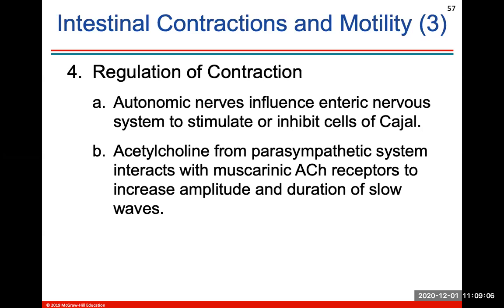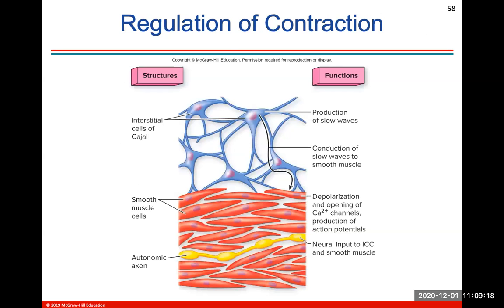Regulation of contraction is under autonomic nerves, which influence the system to stimulate or inhibit these cells. Acetylcholine is released from the parasympathetic system to do that.